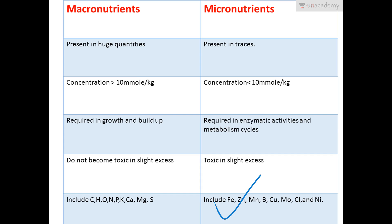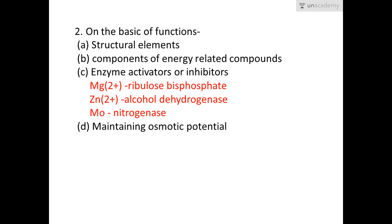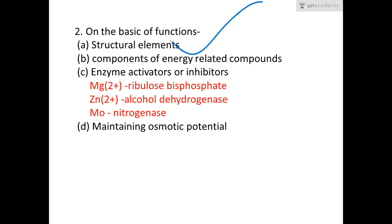The second type of categorization is on the basis of function. We have four categories: structural elements, components of energy-related compounds, enzyme activators, and maintaining osmotic potential. Structural elements are components of biomolecules — carbon, hydrogen, and oxygen are components of cellulose and many other biomolecules, while nitrogen is a constituent of all amino acids and magnesium is a component of chlorophyll.